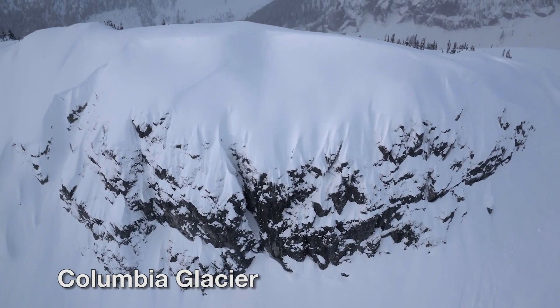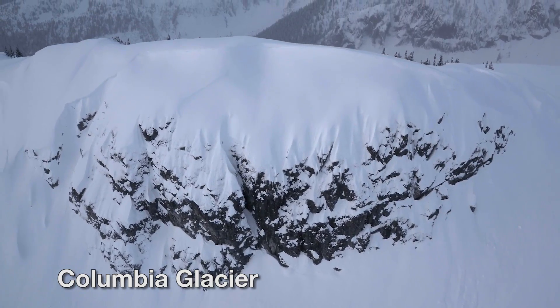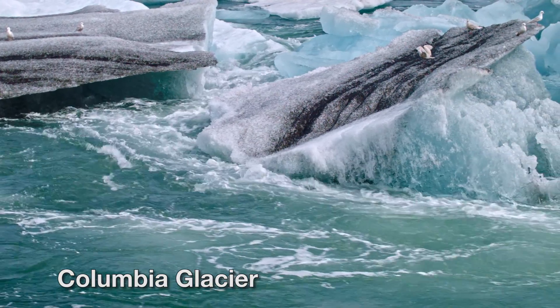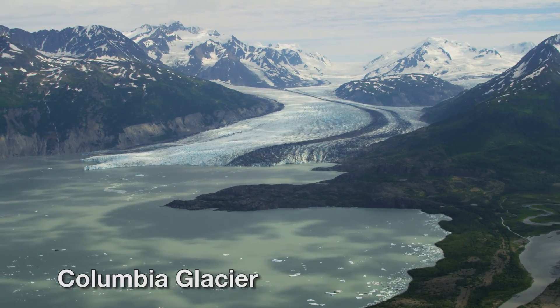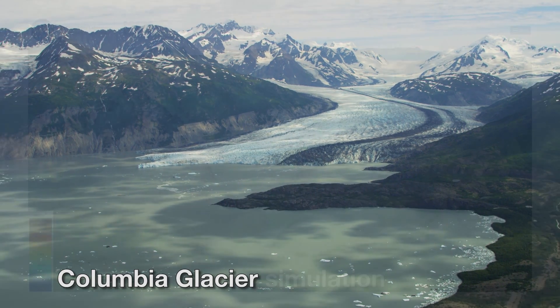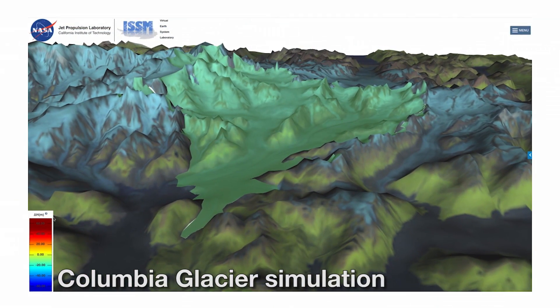The Columbia Glacier is a very large glacier in Alaska that is melting fast. What we would like to do here is understand what happens to this glacier if we increase the amount of snow that falls on it.